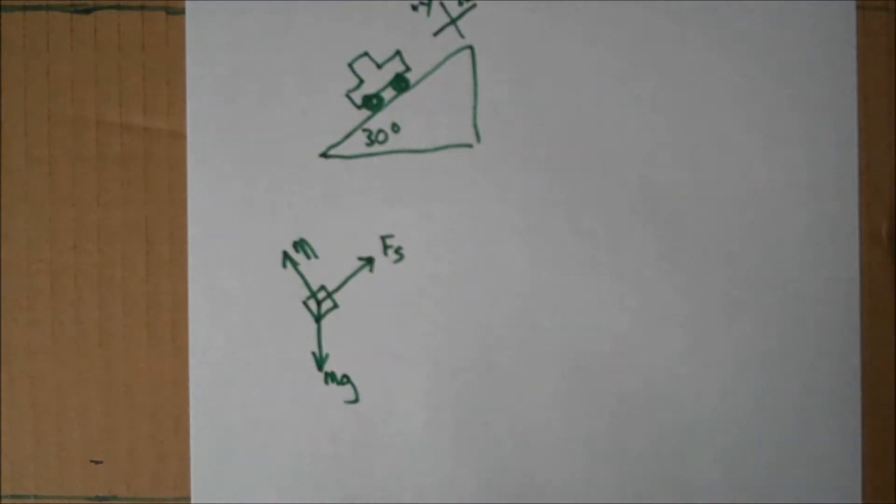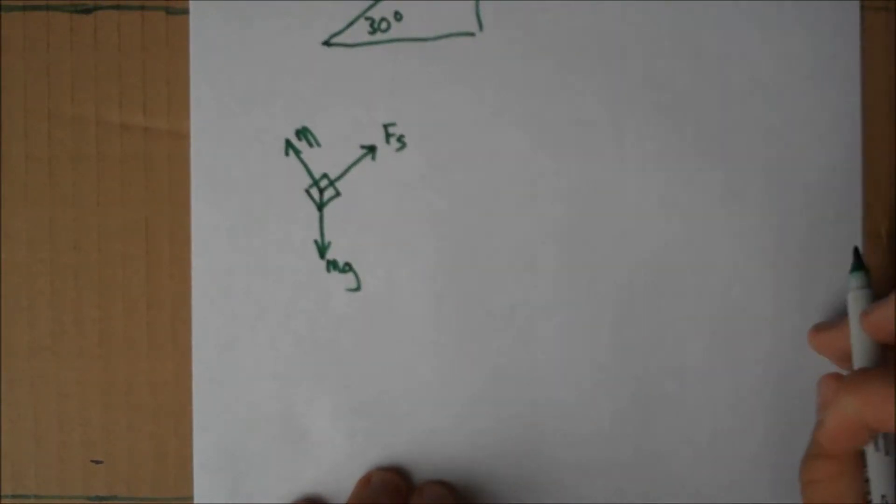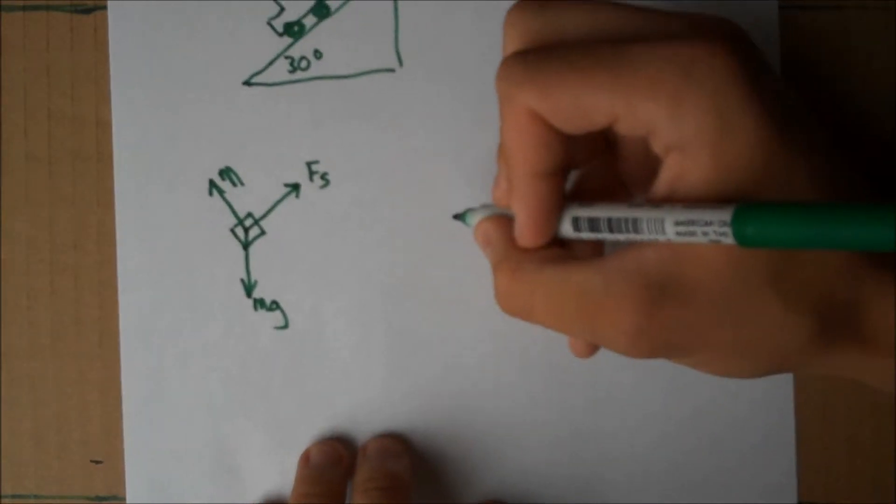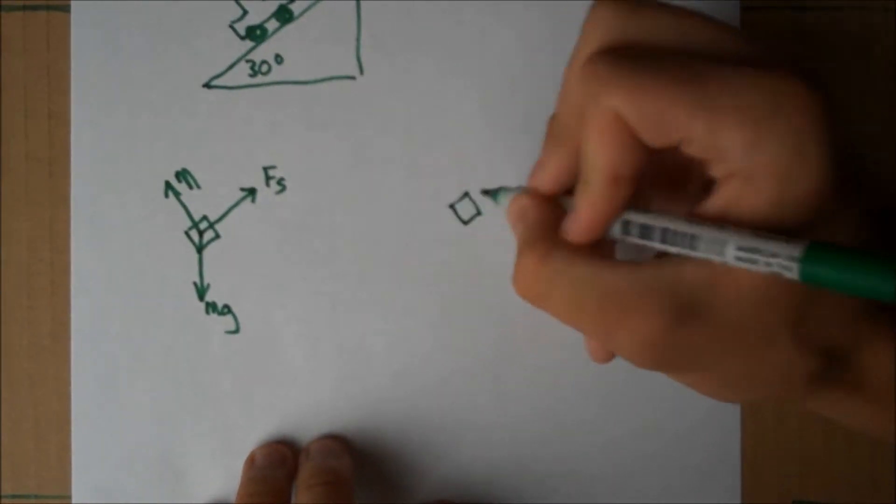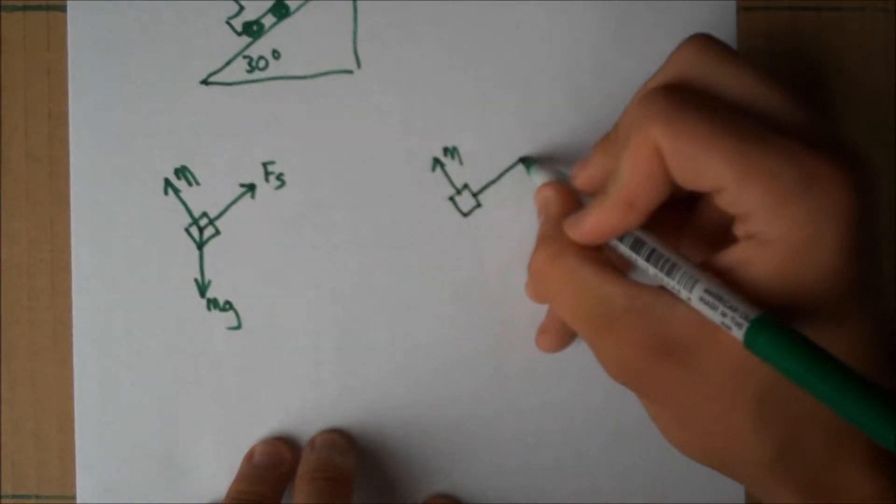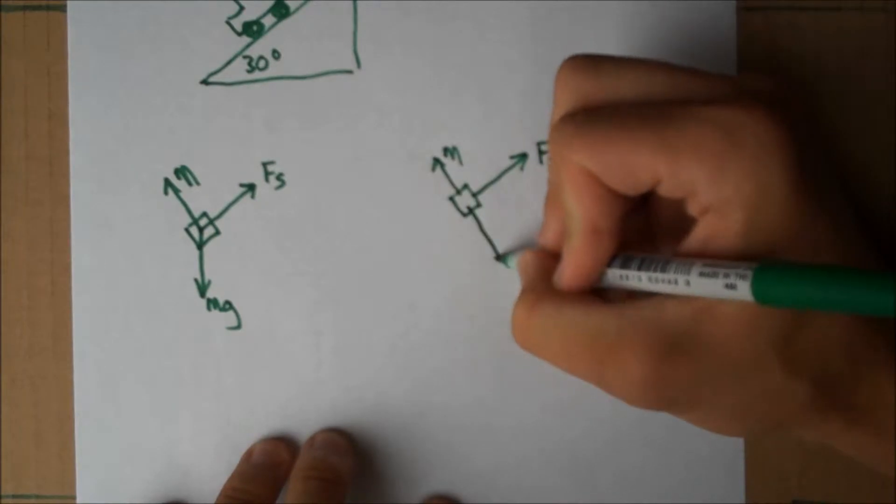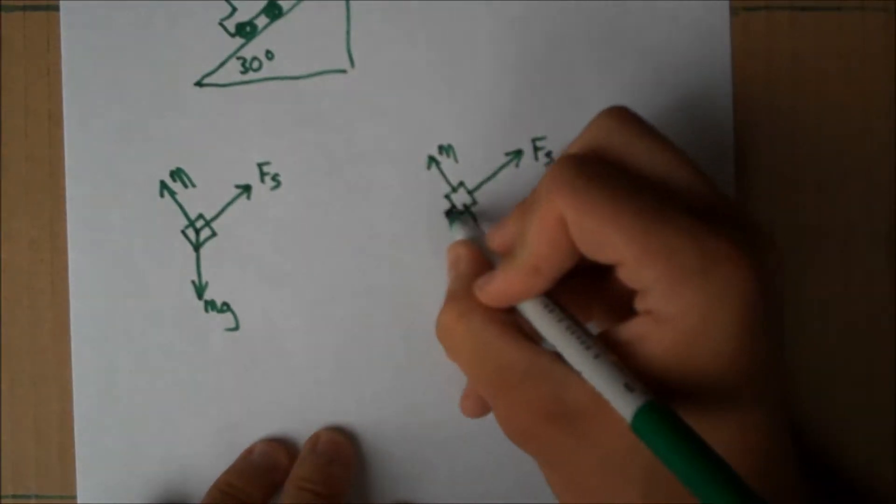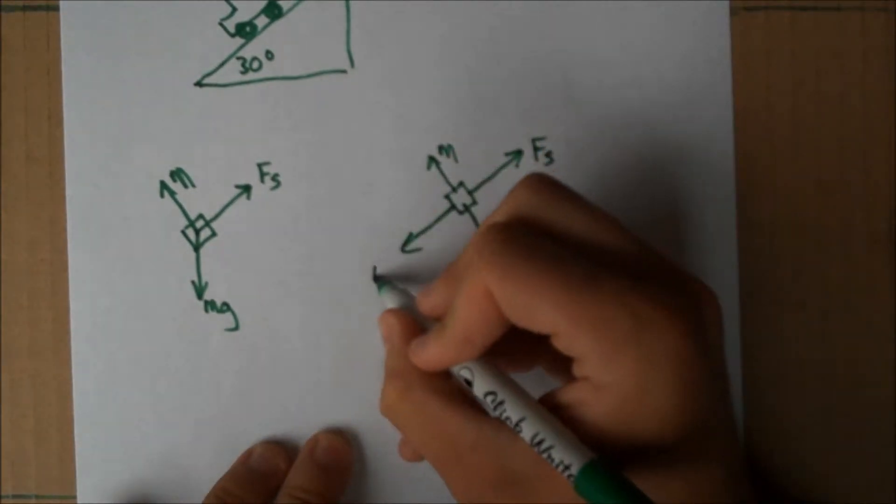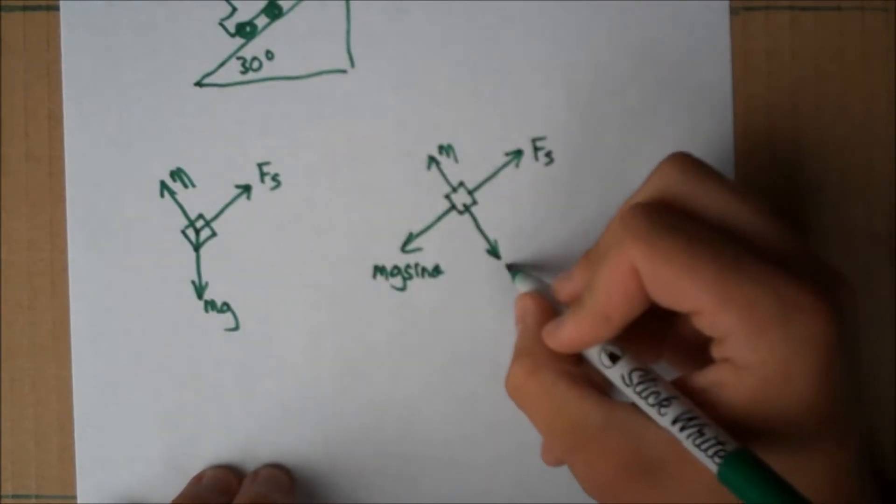This would be alright, but we have our coordinates going in different directions, so we need to break up the forces. The normal force and the force of static friction will stay the same. However, gravity will be broken up into two different forces, which will be Mg sin theta and Mg cos theta.